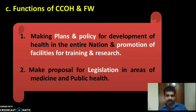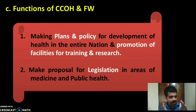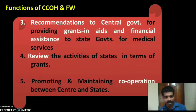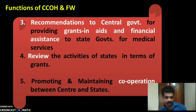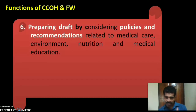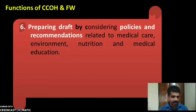The Central Council of Health and Family Welfare has six functions: (1) Making plans and policies for the development of health care services nationwide and promoting training and research; (2) Making proposals for legislation in medicine and public health, such as a Public Health Act; (3) Making recommendations to the central government for grants-in-aid to state governments for medical services; (4) Reviewing state government activities in terms of grants allotted; (5) Promoting and maintaining cooperation between centres and states in health service administration; (6) Preparing drafts based on policies related to medical care, environment, nutrition, and medical education.